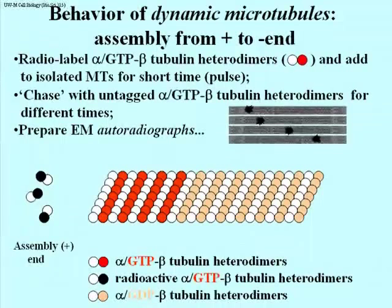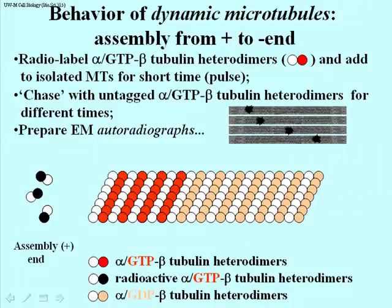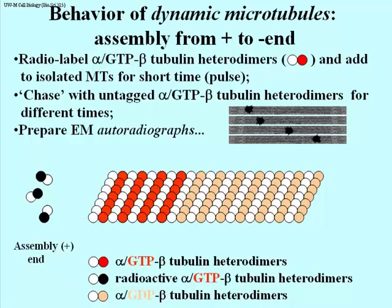In this partially formed microtubule, you see the alpha-GTP-beta-tubulin heterodimers that are already there and not radioactive, and behind them the alpha-GDP heterodimers that have been part of the microtubule for a period of time. The experiment is to add radioactive alpha-beta heterodimers bound to GTP to isolated microtubules for a very short time. After that short pulse of labeling, the sample is centrifuged, the microtubules are brought down to the bottom of the tube, and the supernatant — containing any remaining radioactive heterodimers — is thrown away.